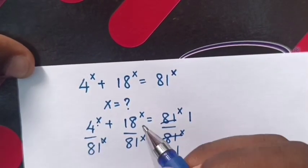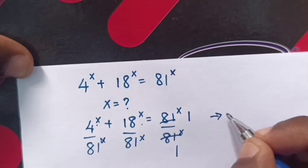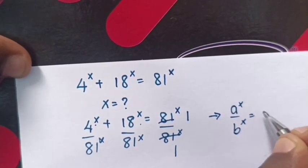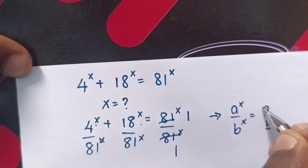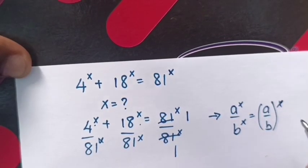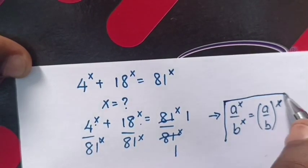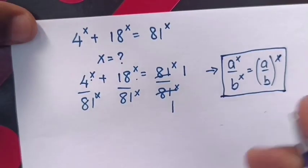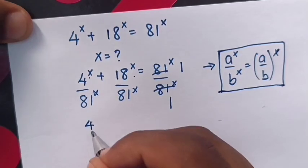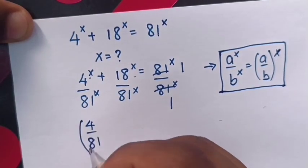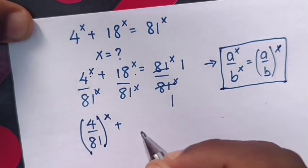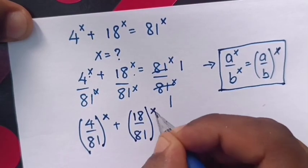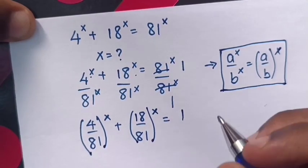From this, we apply the exponential rule that a power x over b power x is equal to (a over b) power x. So our equation will be: (4 over 81) power x plus (18 over 81) power x is equal to 1.